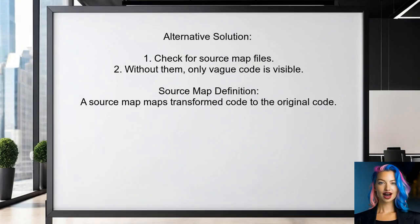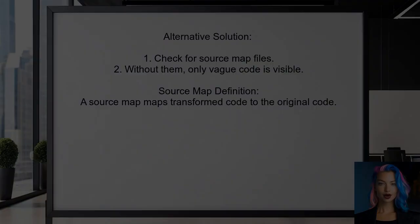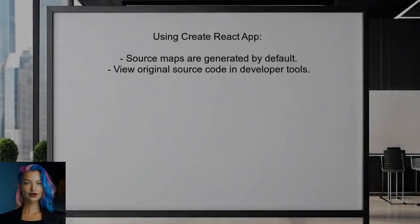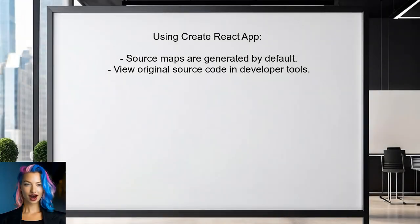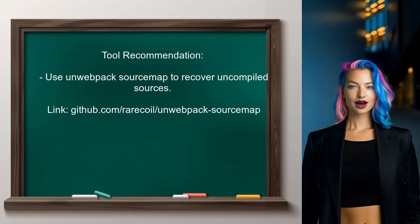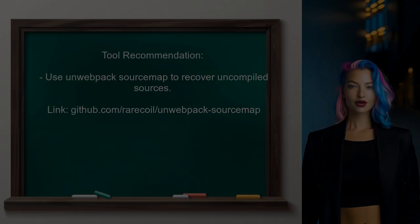Another user explains that to view the actual source code of a React website, you need source map files. Without them, you'll only see a vague, transpiled version of the code. When using Create React App, source maps are generated by default for each JavaScript file, allowing you to view the original source code in developer tools. Additionally, there's a tool called Unwebpacked Source Map that can help recover uncompiled TypeScript and JSX sources from webpack source maps.